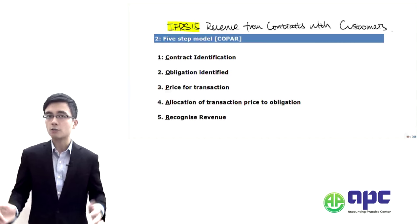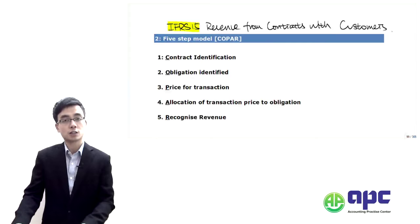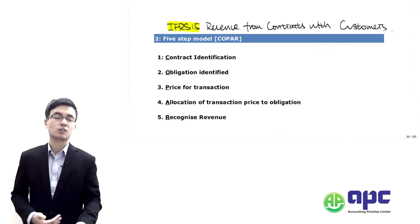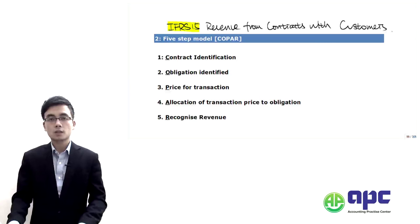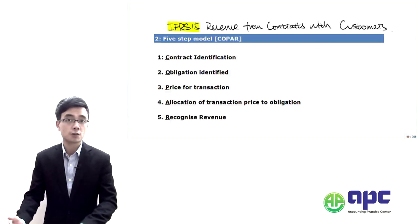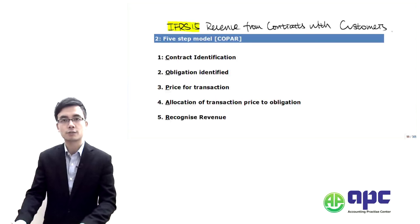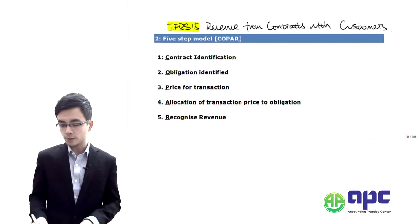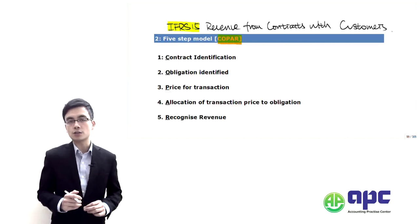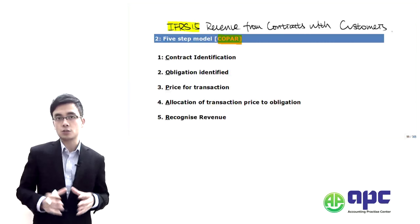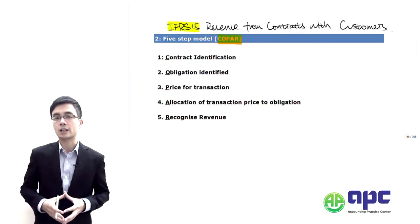You can have the early adoption option to adopt IFAS number 15, but it will be compulsory to be adopted on 1st January 2017. To see how we're going to recognise revenue based upon this new accounting standard, we're going to use mnemonics. We've got lots of mnemonics in the course — it's called COPA. Those are the five steps used to recognise revenue under the new accounting standard.